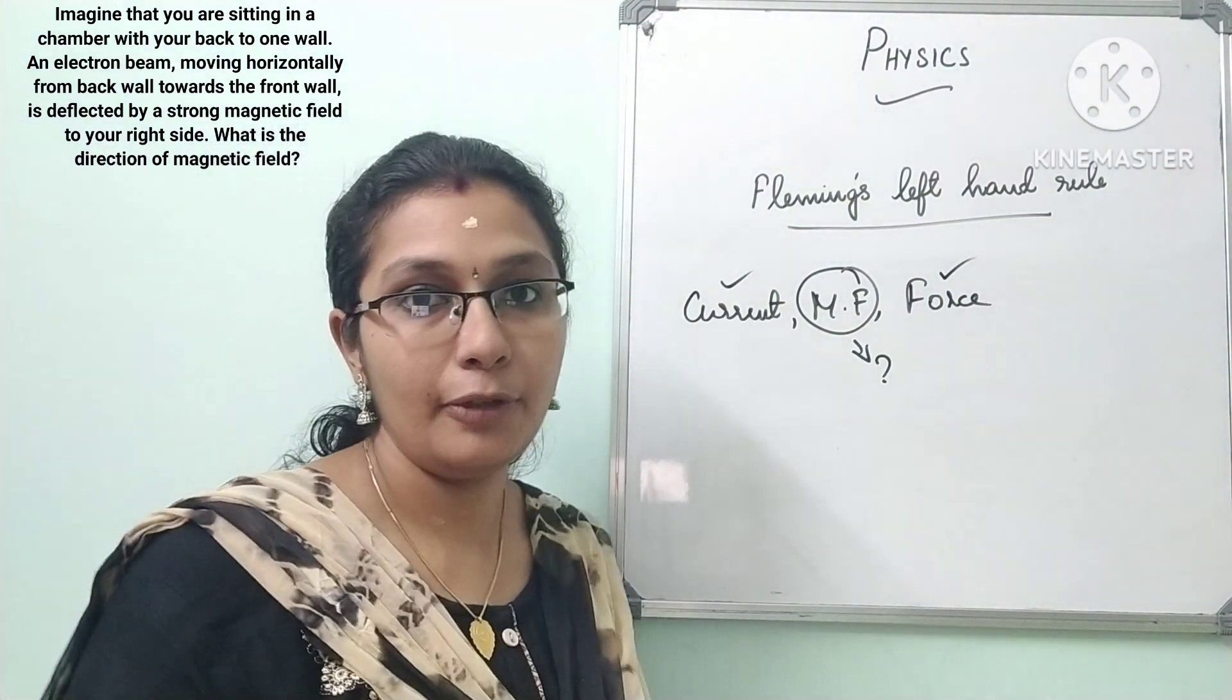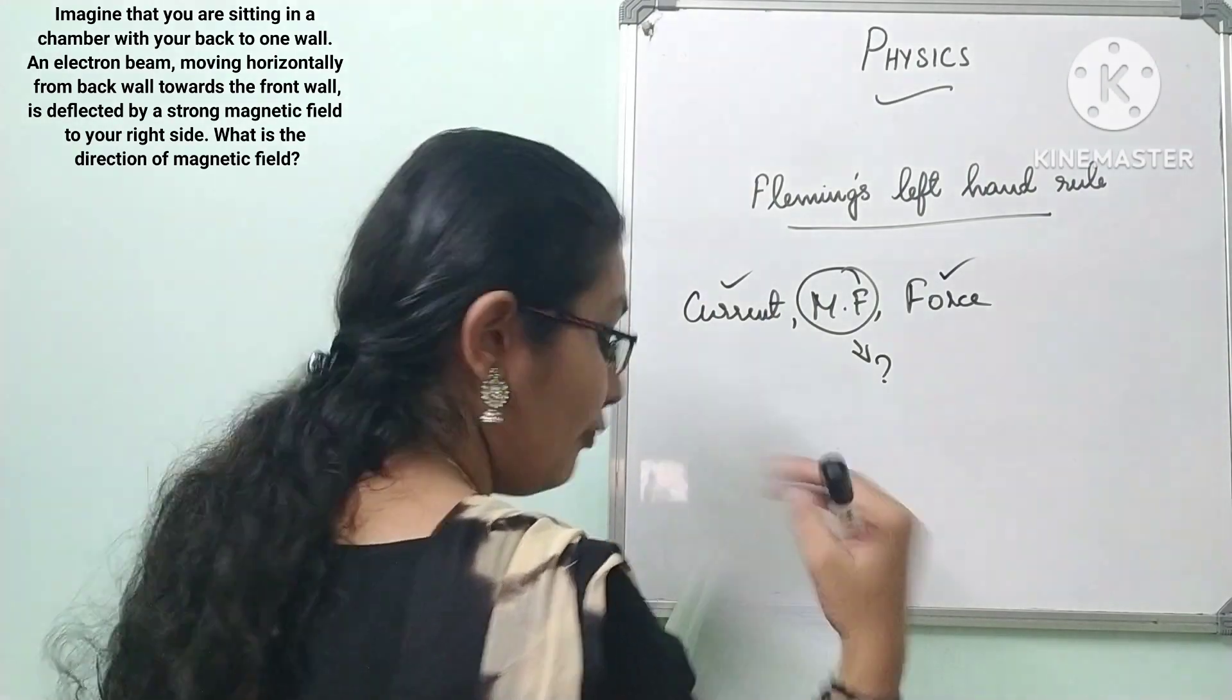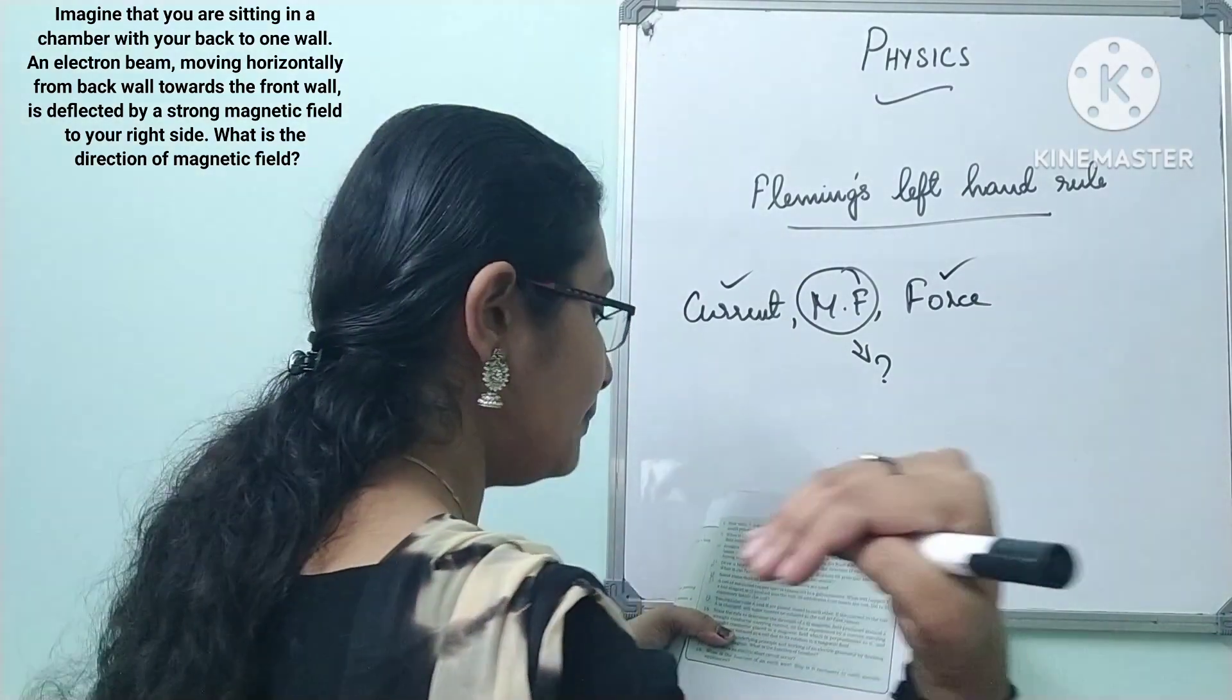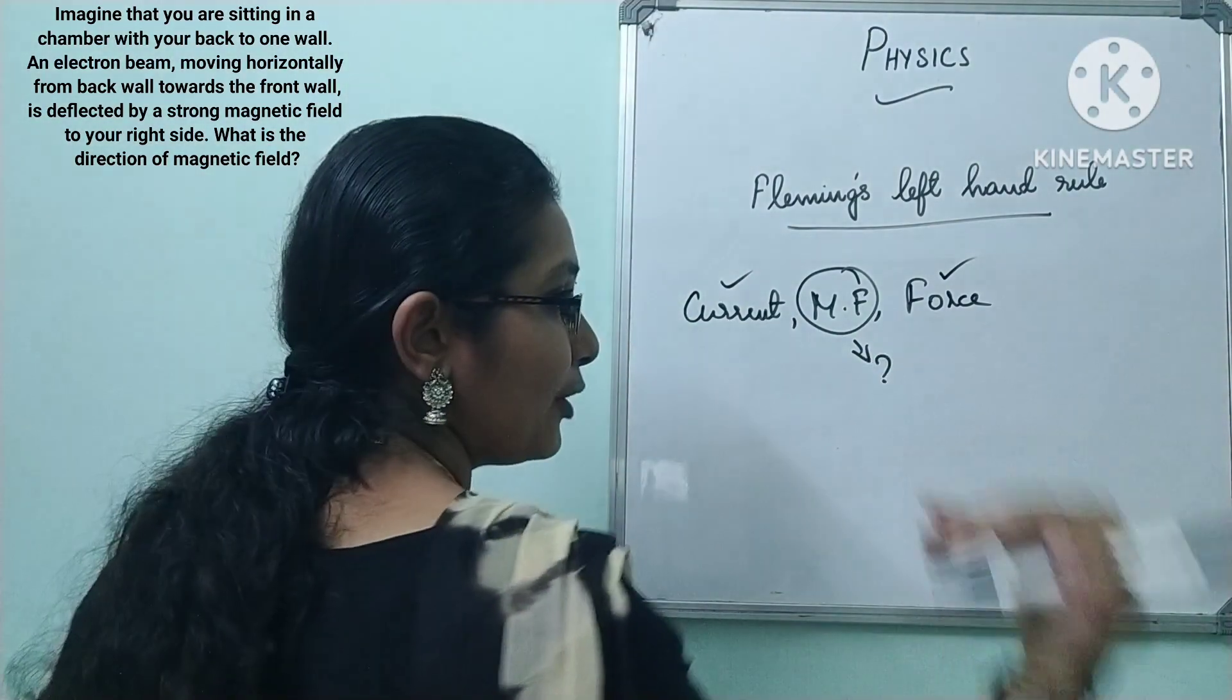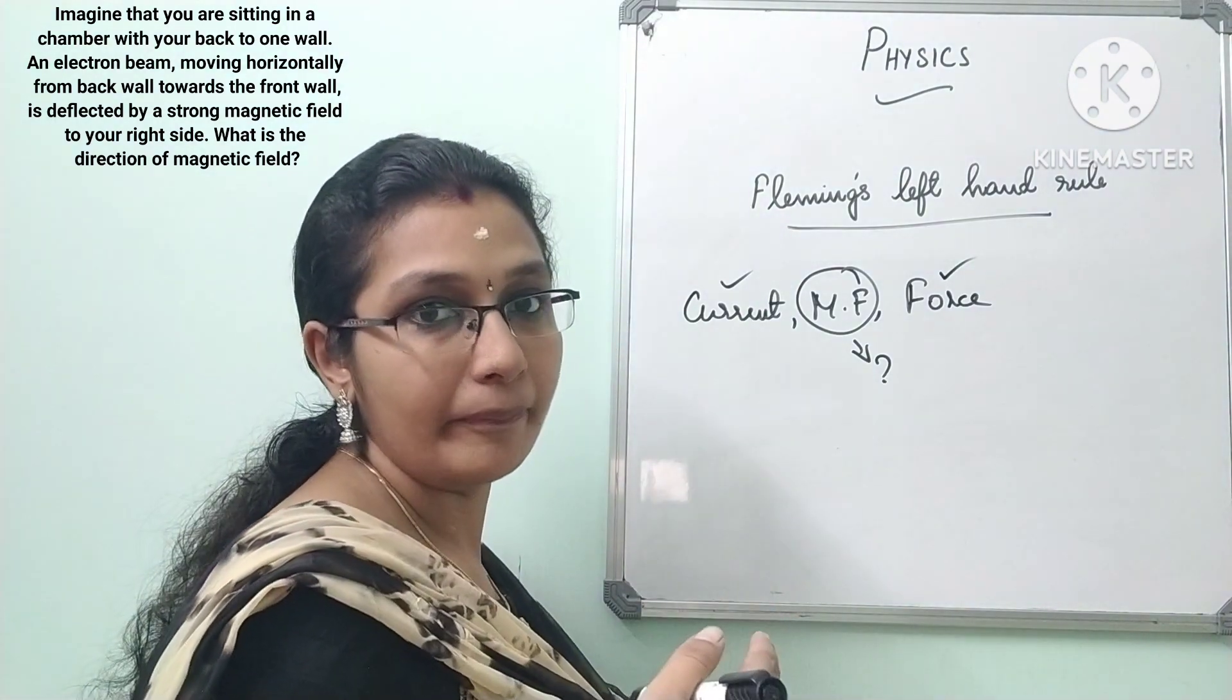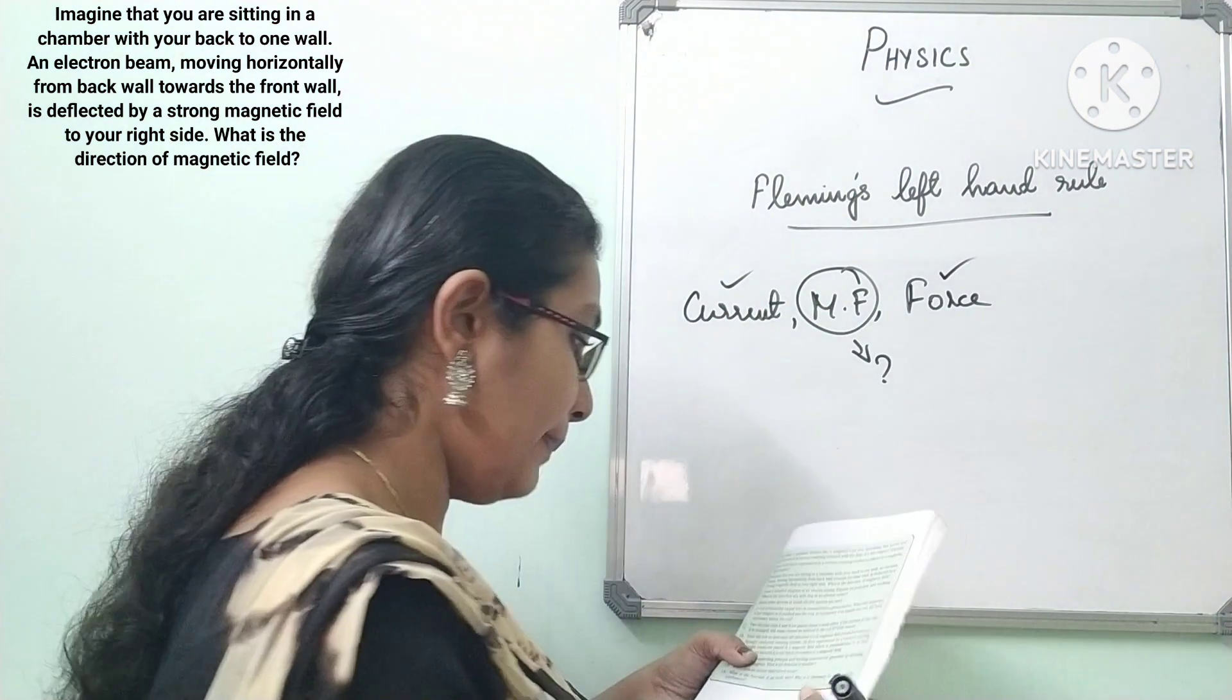Now from your point of view, I will show. You are sitting with your back to one wall and the electron beam is moving horizontally from the back wall to the front wall. So if the electron direction is like this, the current direction will be from front to back. Clear? Current direction is from front to back.